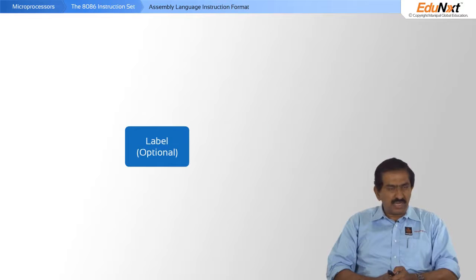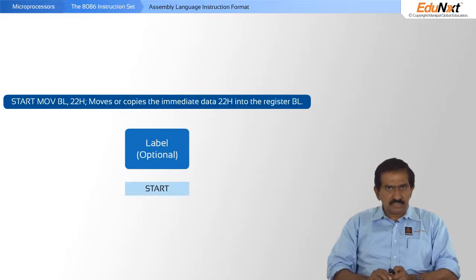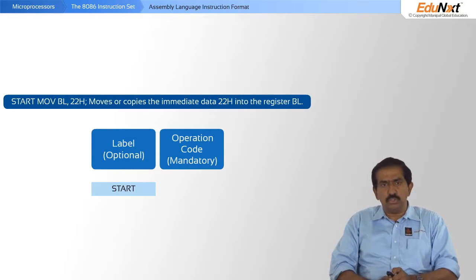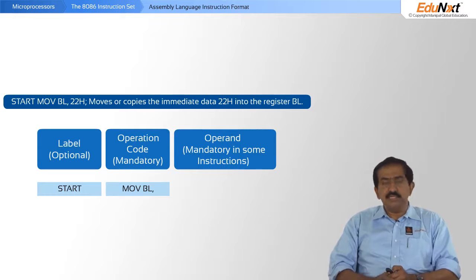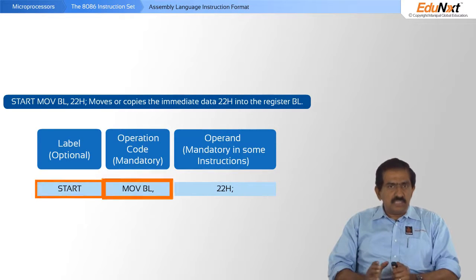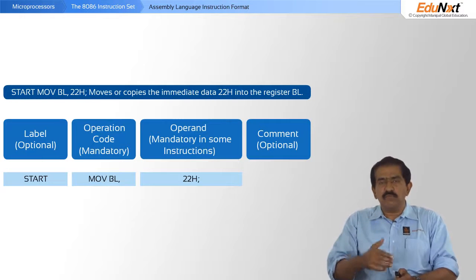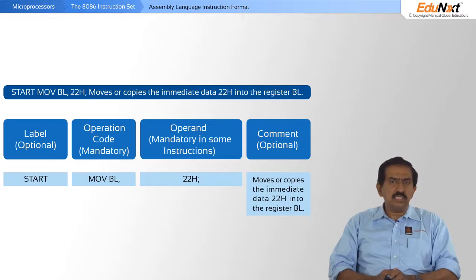Let us break up a typical instruction. The instruction consists of an optional label — for example, 'start' in 'start: MOV BL, 22H' — which is used during the assembly process. The operation code, 'MOV' in this case, is mandatory. The operand is mandatory in some instructions and implied in others; here it is the value 22H. You can also have an optional comment, which helps the reader understand the program — for example, 'moves or copies the immediate data 22H into register BL.'